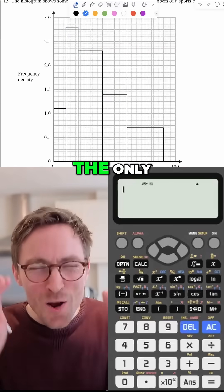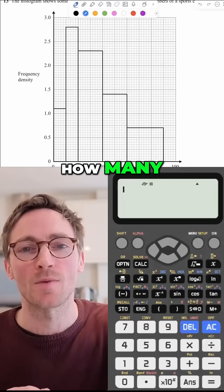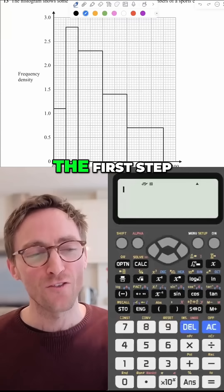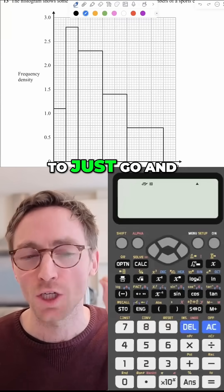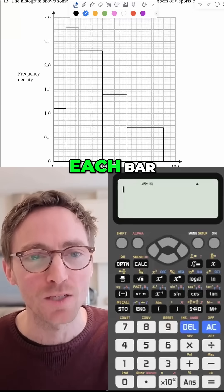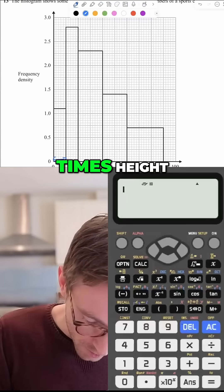Histograms, the only difference between histograms and bar charts is that it's not the height of the bar that tells you how many people are in it. It's the area. The first step of every histograms question is to just go and find the area of each bar. And by area, I mean base times height. It's a rectangle.